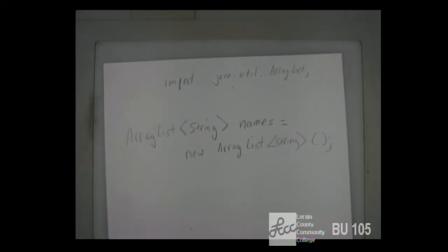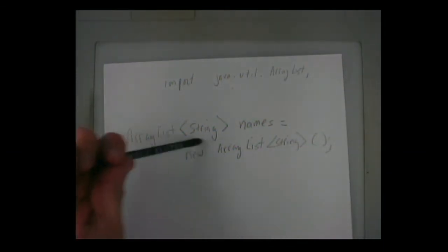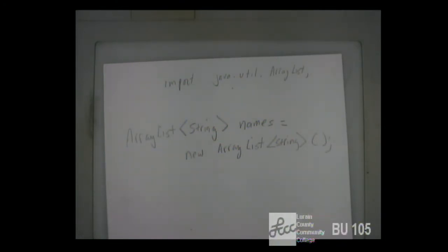In our order example, we have an array list on the order that contains pizzas, because that's all you can put on an order. When you declare an array list, how big is it? Zero — it's empty. There are no positions in the array list initially. When I declare a regular array, I immediately know the size and it's always that size. With an array list, it's initially empty.